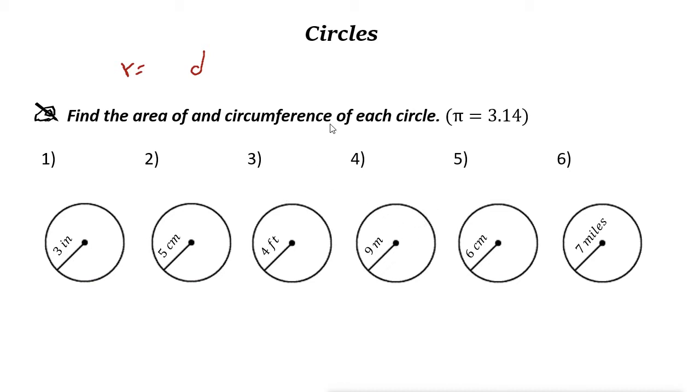To find the area of a circle, just use this formula: A equals pi R squared. Pi is about 3.14, so if you have the radius multiplied by itself then times 3.14 or times pi, you get the area.